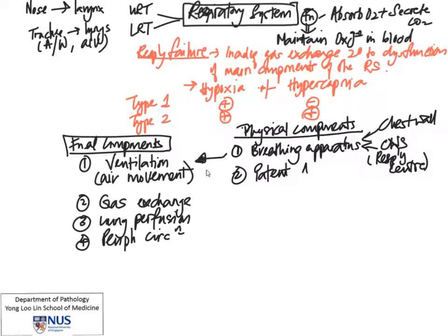The other component required for ventilation is the patency of our airways. If the airways are obstructed, the air will not be able to move through them, which can give rise to respiratory dysfunction and respiratory failure.